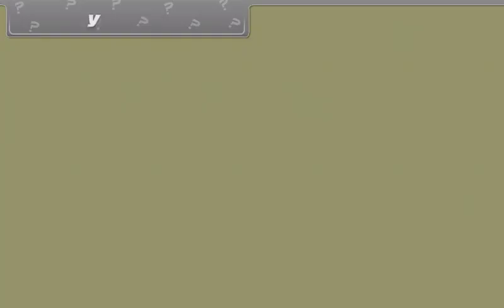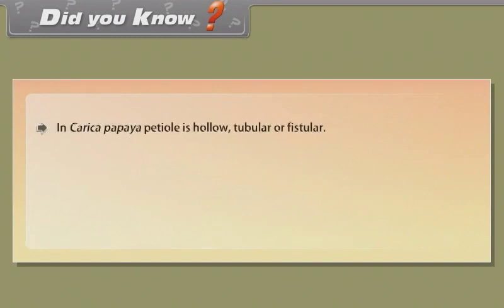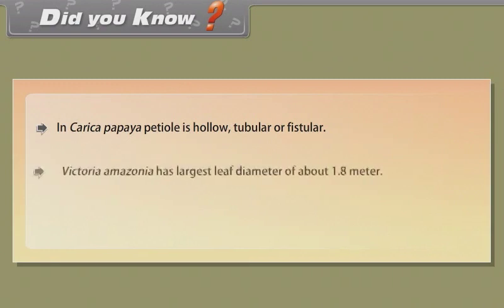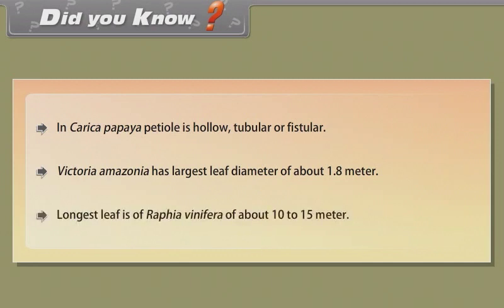Did you know? In Carica papaya, the petiole is hollow, tubular or fistular. Victoria amazonica has the largest leaf, with a diameter of about 1.8 meters. The longest leaf is of Raffia vinifera, measuring about 10 to 15 meters.